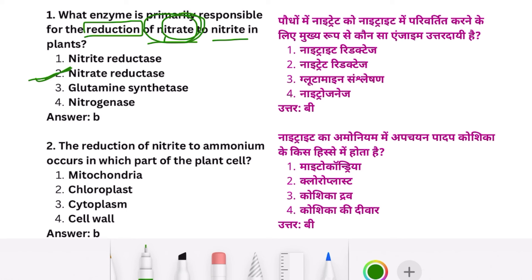The reduction of nitrite to ammonia occurs in which part of the plant cell? Nitrite to ammonia — which part of the plant cell?